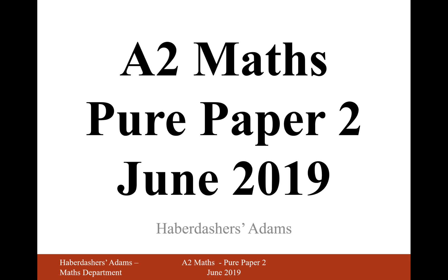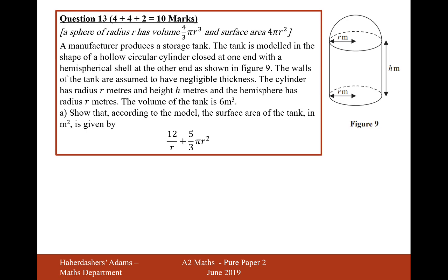Hello there and welcome to the June 2019 paper, here we're on question 13. A manufacturer produces a storage tank. The tank is modeled in the shape of a hollow circular cylinder closed at one end with a hemispherical shell at the other end as shown in figure 9.